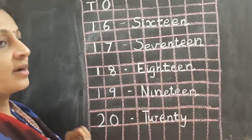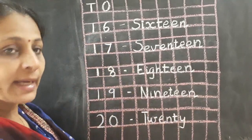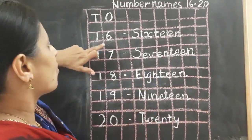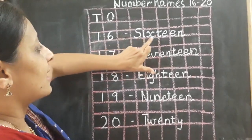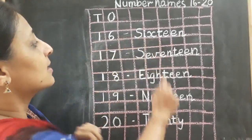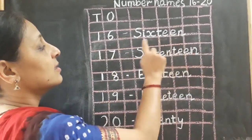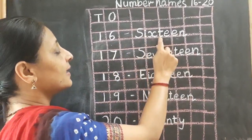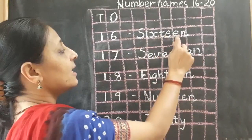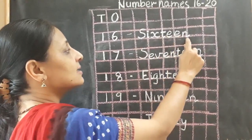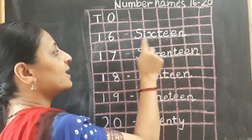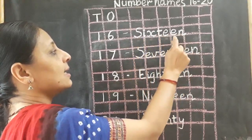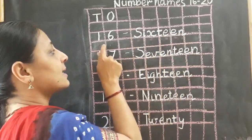Shall we repeat once again? S, I, X, T, E, E, N. Sixteen. Once again: S, I, X, T, E, E, N. Sixteen.